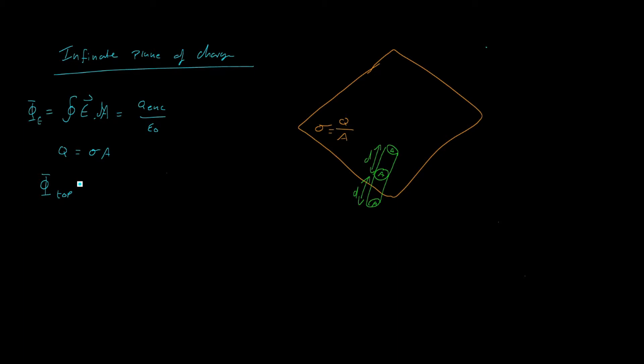plus the flux through the bottom cap, plus the flux through the sides, is going to equal the charge enclosed over epsilon 0. We know the charge is equal to sigma A, or the charge density times the area over epsilon 0.